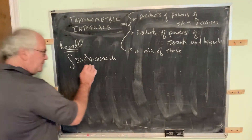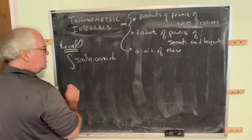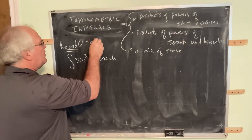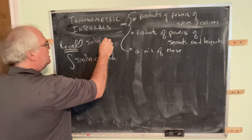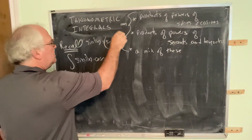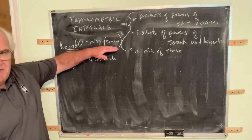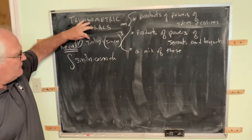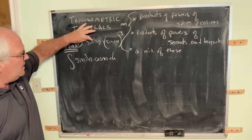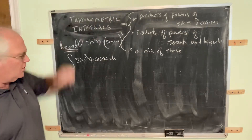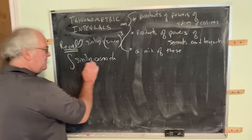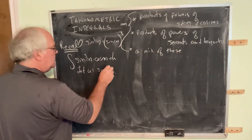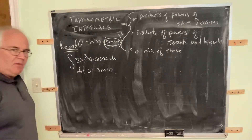The question is: what are we going to choose u to equal? We have a function being raised to a power. Remember that sine to the third of x means sine of x to the third power — that's what the shorthand notation means. So we can let u equal sine of x, the inside function, just like we always do.